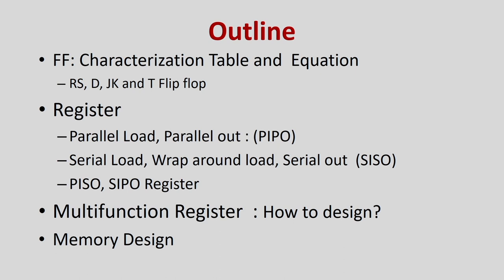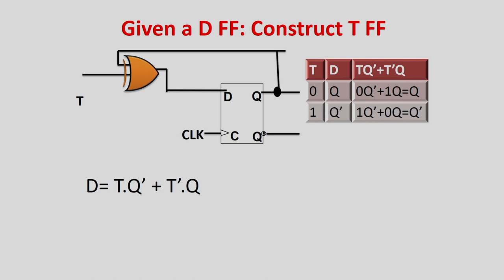Today we will look at characteristic equations, and then we will move towards the register — particularly universal registers that support all serial in, serial out, parallel in, parallel out combinations — and after that we will look at multifunction registers and memory. Given the characteristics table, we want to know what should be the input to get a specific output.